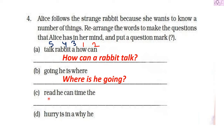Next we have: 'read he can time the.' In this sentence there is no word from the WH-family, but we do have 'can,' which also poses questions. So the first word is 'can,' then 'he,' 'read,' 'the,' 'time.' The sentence is: Can he read the time?